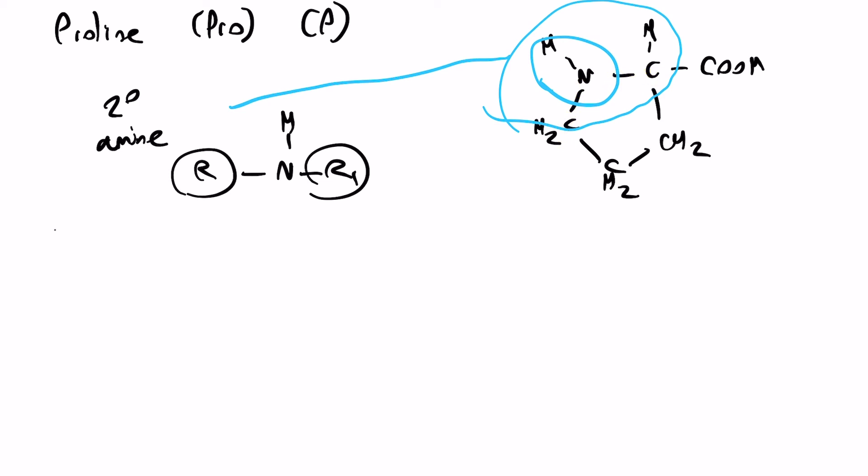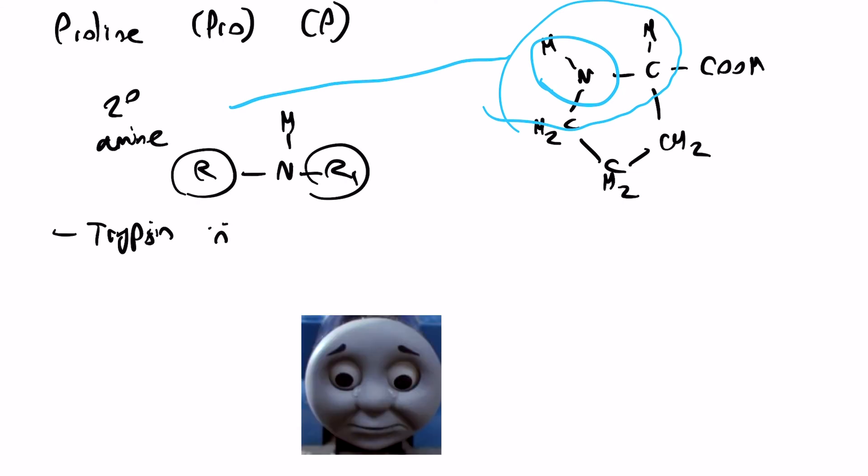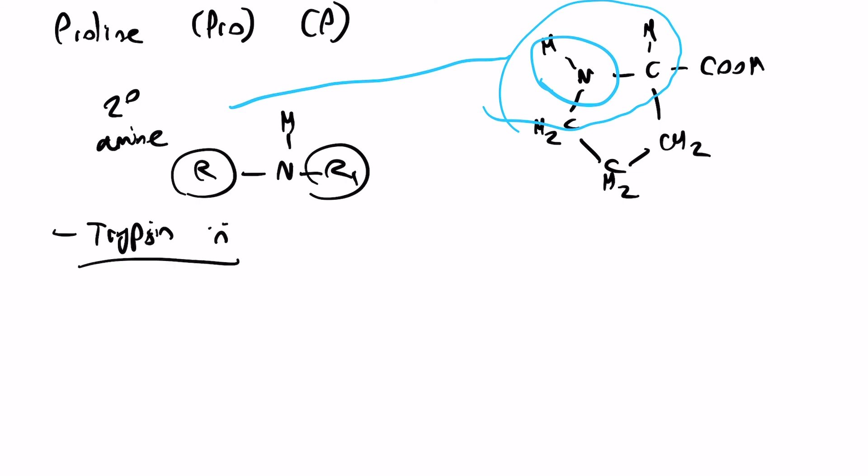If you want a fun fact about proline, it's actually trypsin. Now trypsin cuts at C-terminal lysines or arginines, but if you have a C-terminal bound proline, the enzyme won't actually cut there. So you can use proline to basically say no to trypsin. So we'll just put a sad face next to trypsin and put an X.